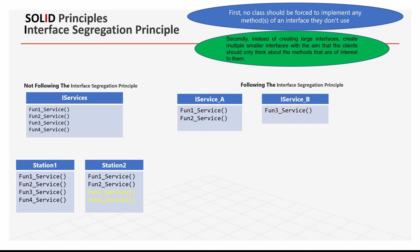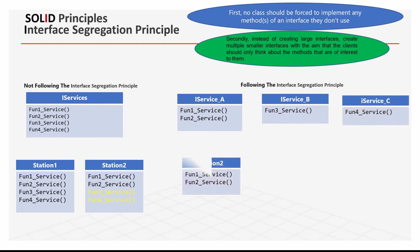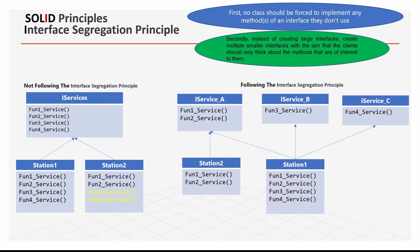So we separate the iService interface. We make iService A, iService B, and iService C. Station 2 just needs to use function 1 and function 2, so we can get those elements from iService A. And function 1 needs to use function 2, with function 1 from iService A.